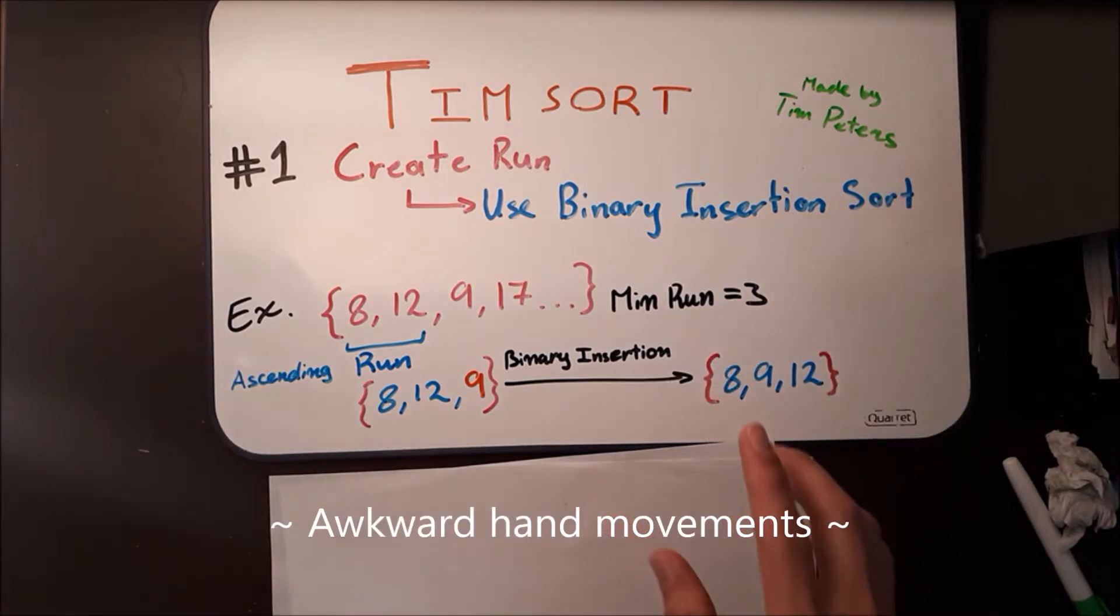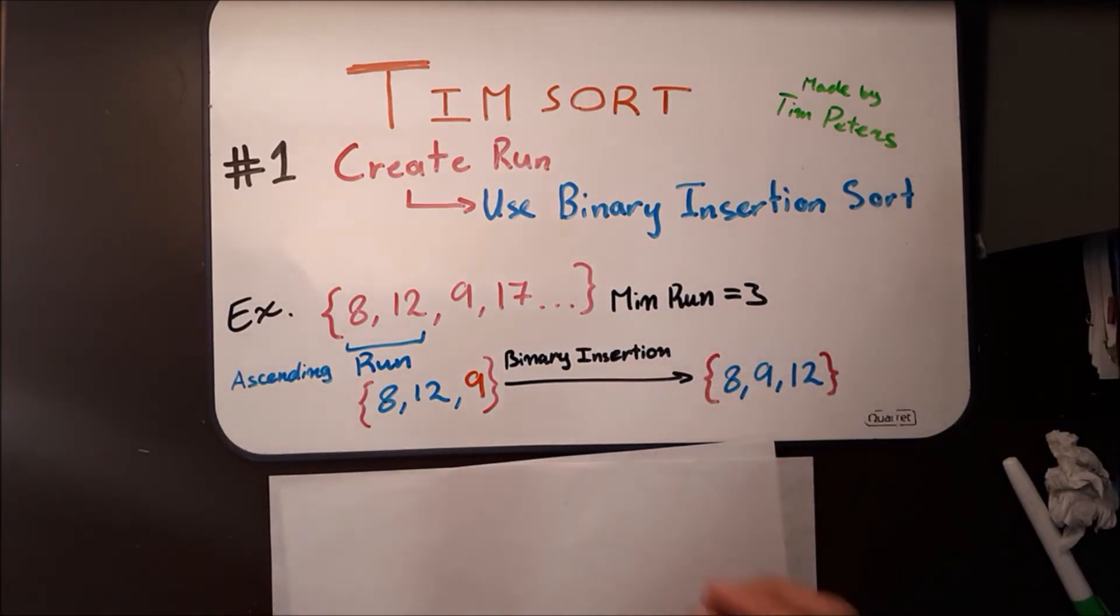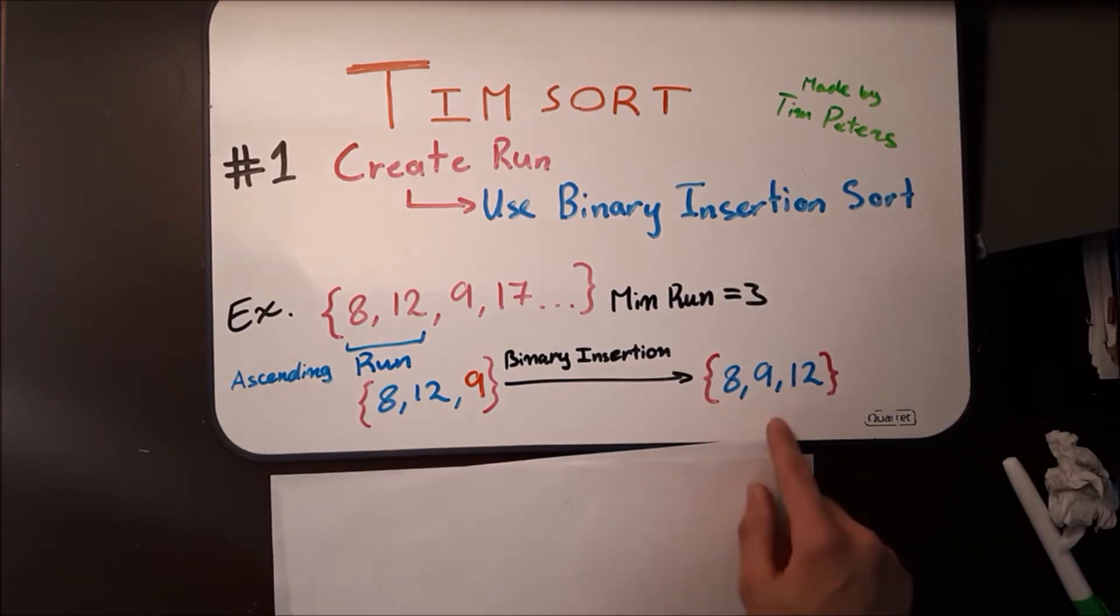once the array is divided into the runs, the algorithm begins to sort the runs using binary insertion sort. And that's when this problem is resolved, and the run is turned into 8, 9, 12.